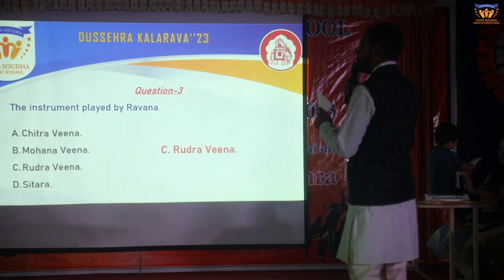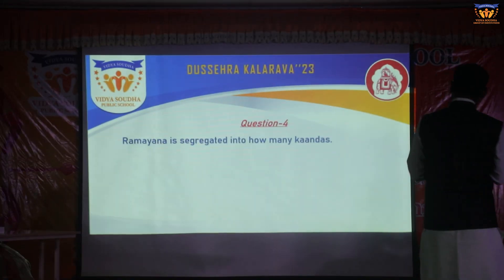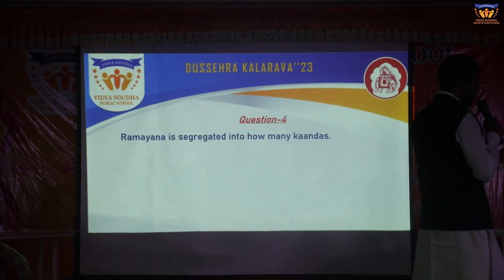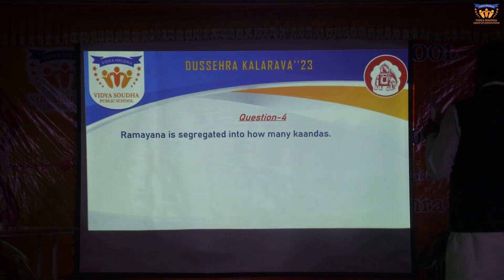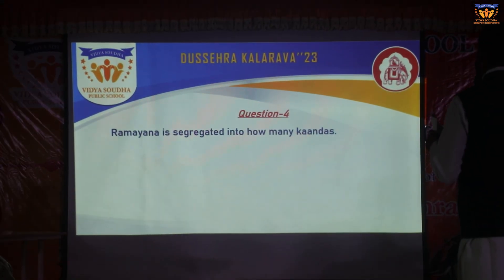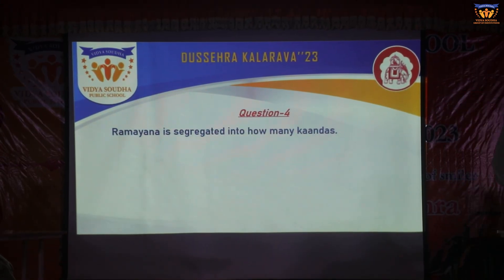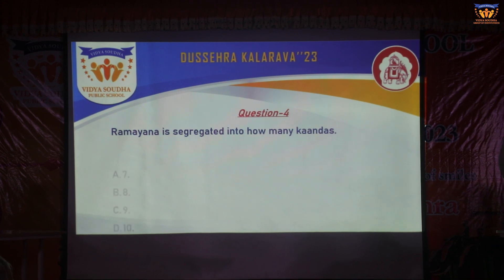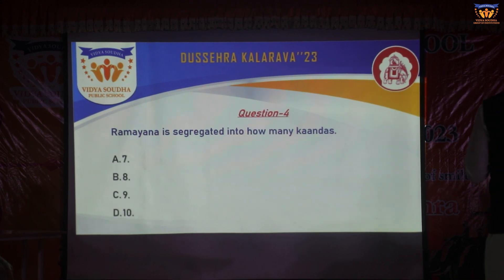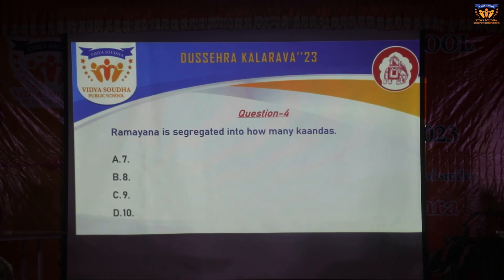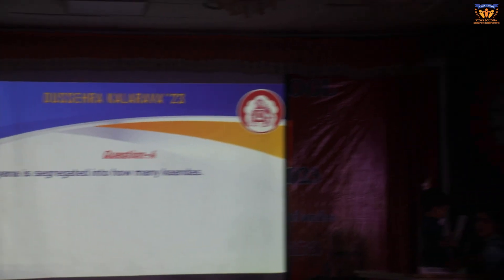Hello, for question 4. This question is for Chitraputa. Ramayana is segregated into how many kandas? Option A: 7, B: 8, C: 9, and D: 10.